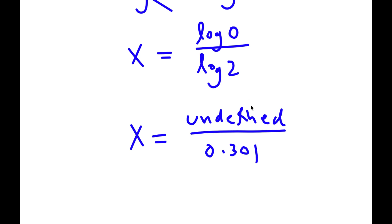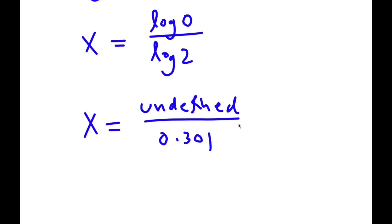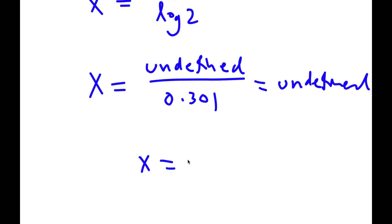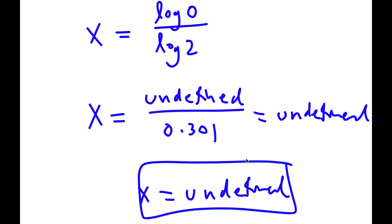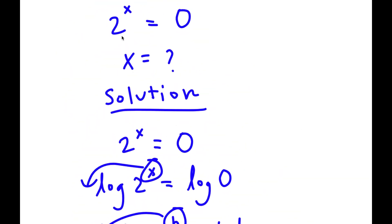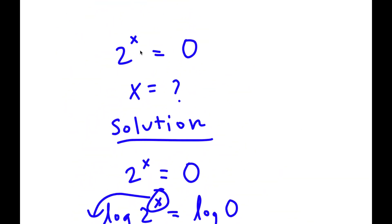If something is undefined and it's divided by a number, then the result will also be undefined, because you can't divide an undefined value with another number — meaning the value of x is undefined. Also, you can't actually take the power of a number and make it equal to 0, because no matter what power you take, a number cannot equal 0. So undefined is my answer.